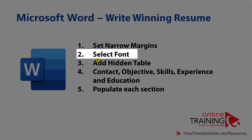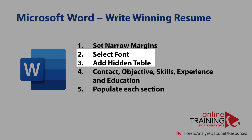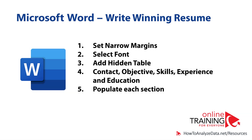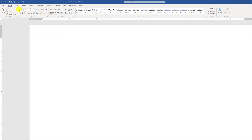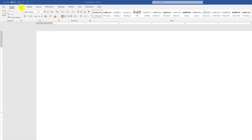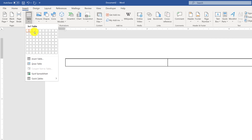As a next step, you will need to select the font and add a hidden table into the Microsoft Word document. To add the table, you need to navigate to the Insert tab and select Table.